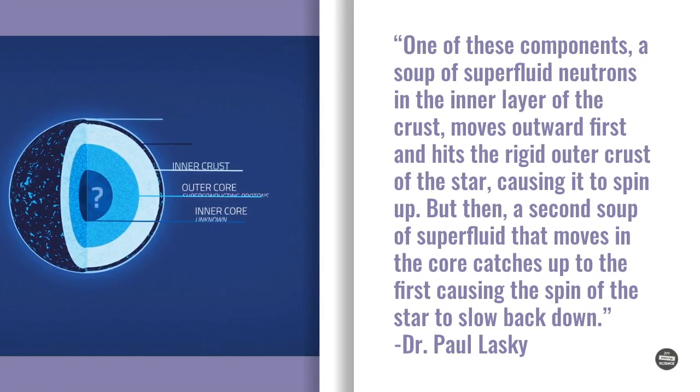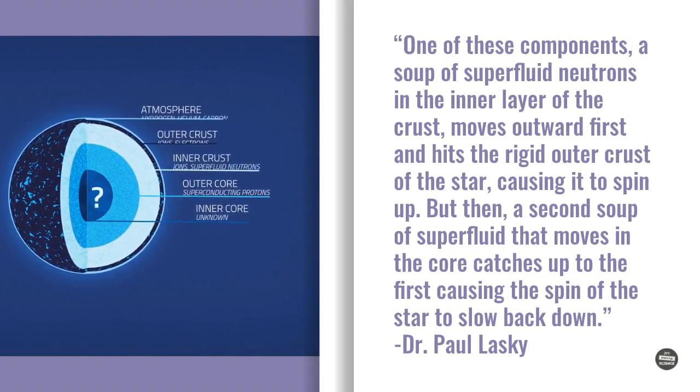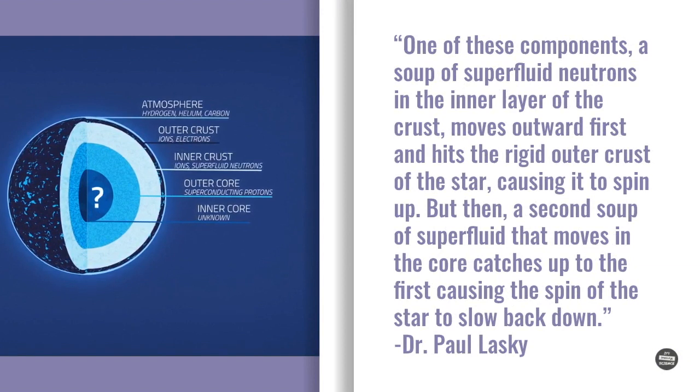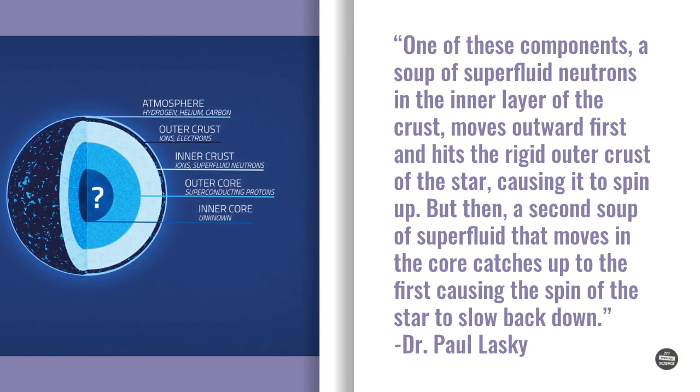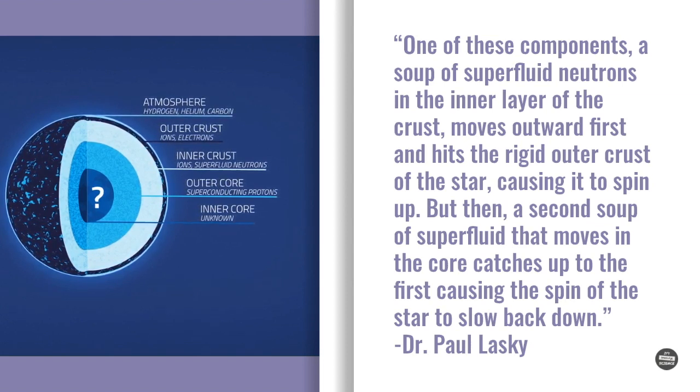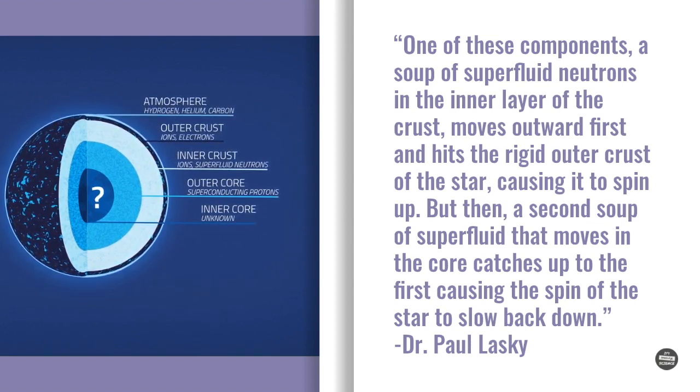One of these components, a soup of superfluid neutrons in the inner layer of the crust, moves outward first and hits the rigid outer crust of the star, causing it to spin up. But then, a second soup of superfluid that moves in the core catches up to the first, causing the spin of the star to slow back down.